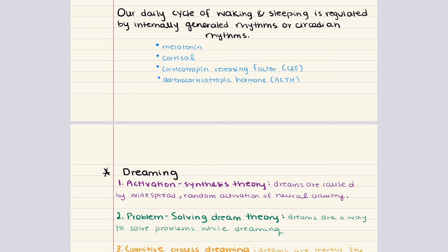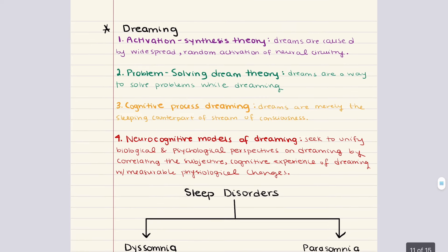Most dreaming occurs during REM, though soon after entering stage two sleep, mental experiences start to shift to a dream-like state. Throughout the night, approximately 75% of dreaming occurs during REM. REM dreams tend to be longer and more vivid than those during non-REM sleep. While the purpose and meaning of dreams is not fully understood, a few theories have been proposed.